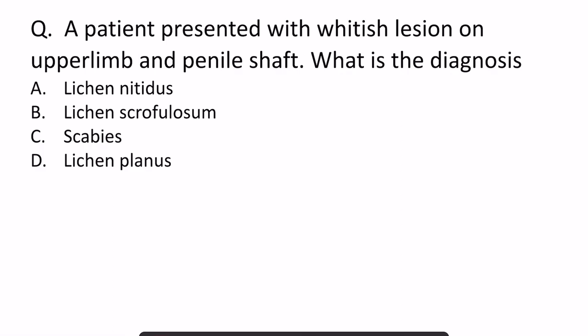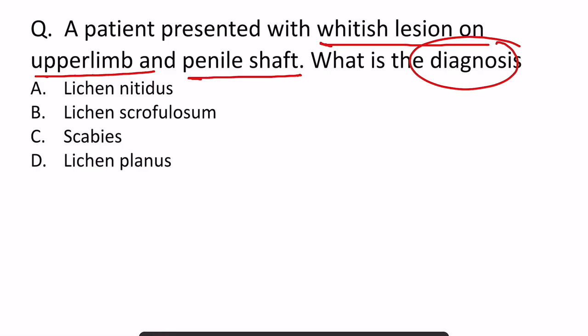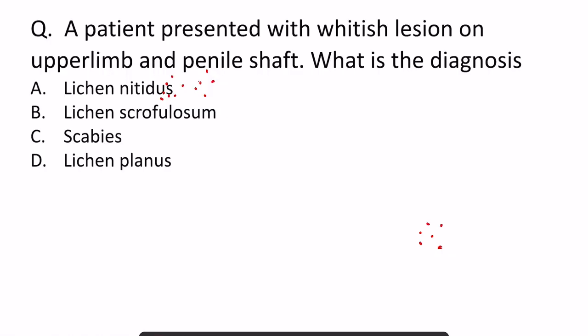The question was that a patient presented with whitish lesions on the upper limb and penile shaft — what is the diagnosis? This was the image given: very small, pinhead-sized whitish lesions present over the elbow and forearm, and also present over the shaft of the penis.